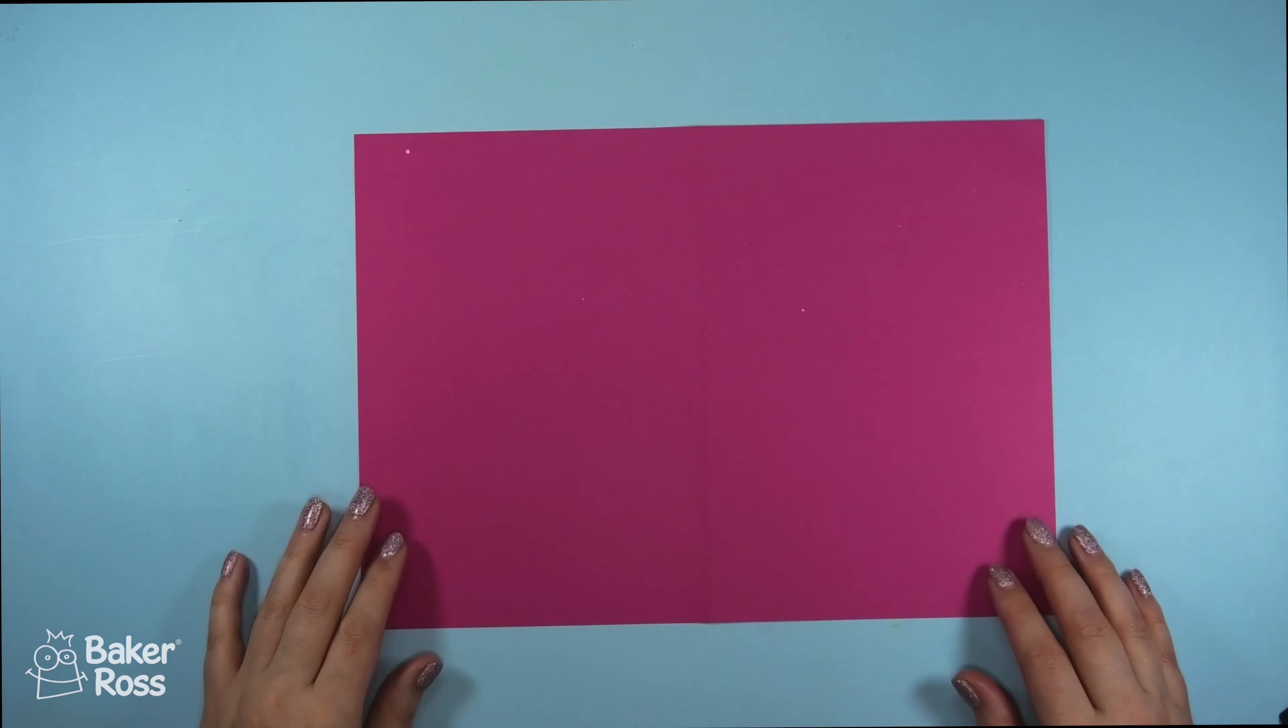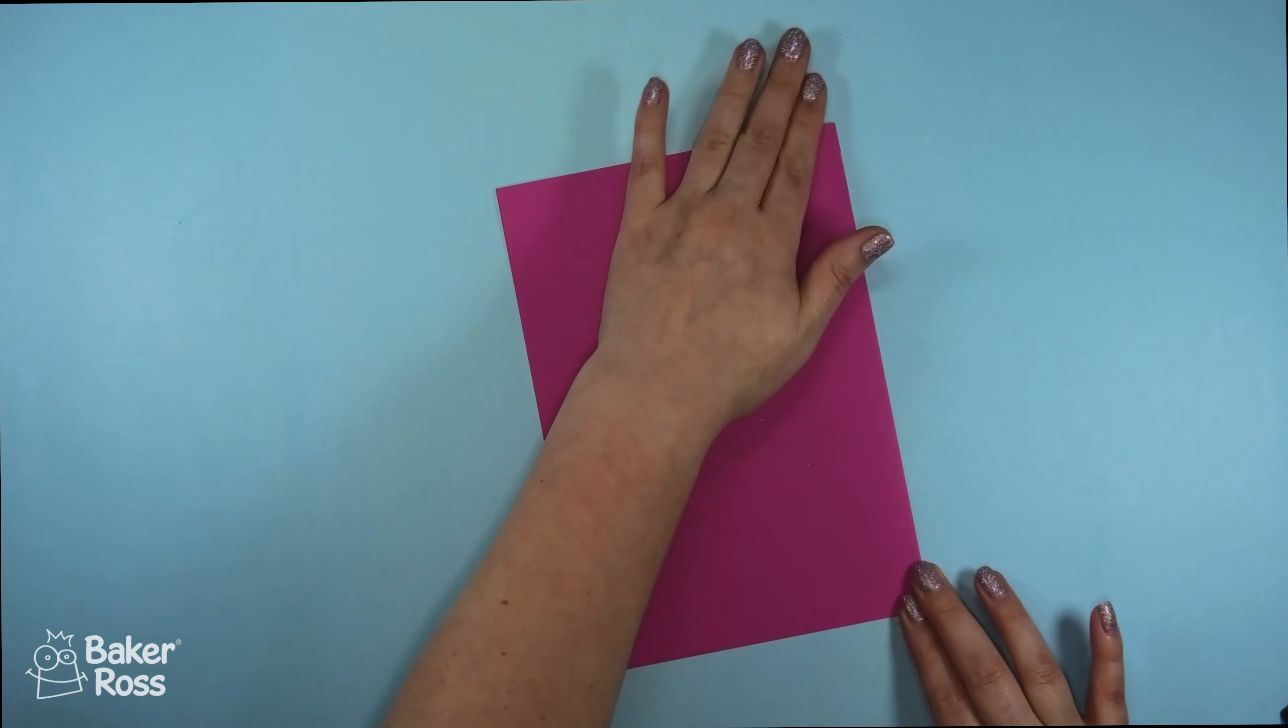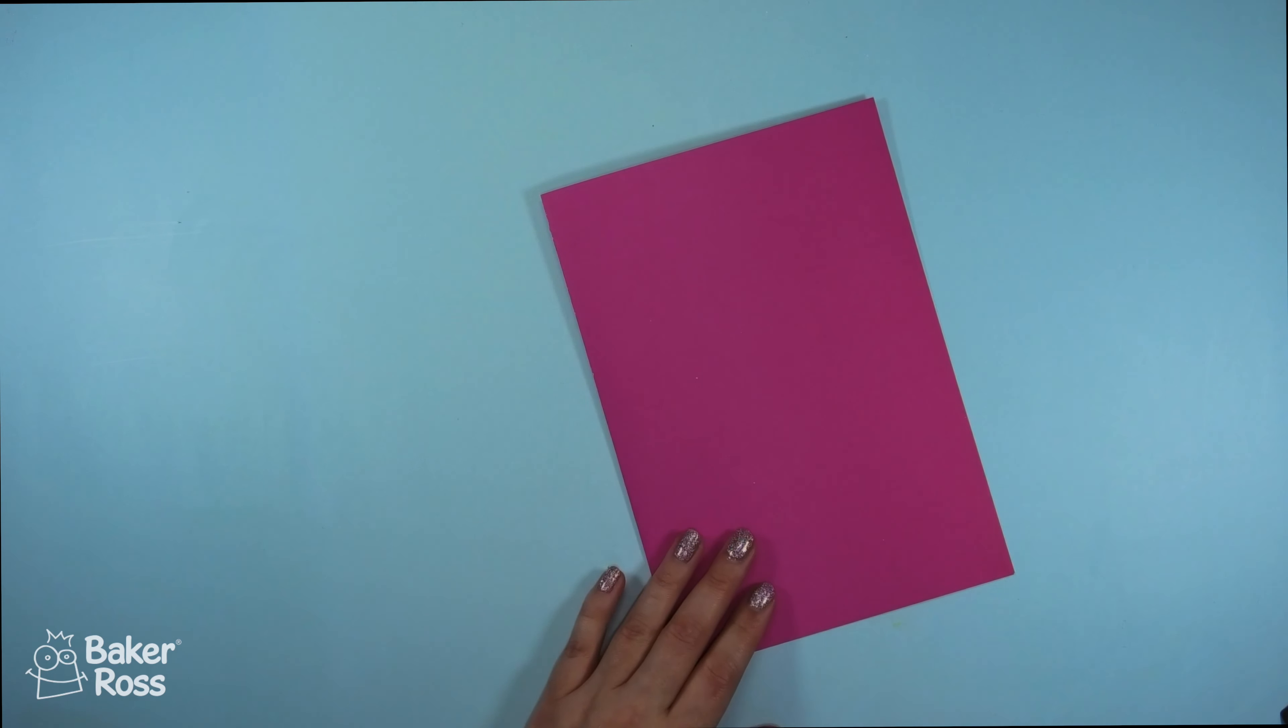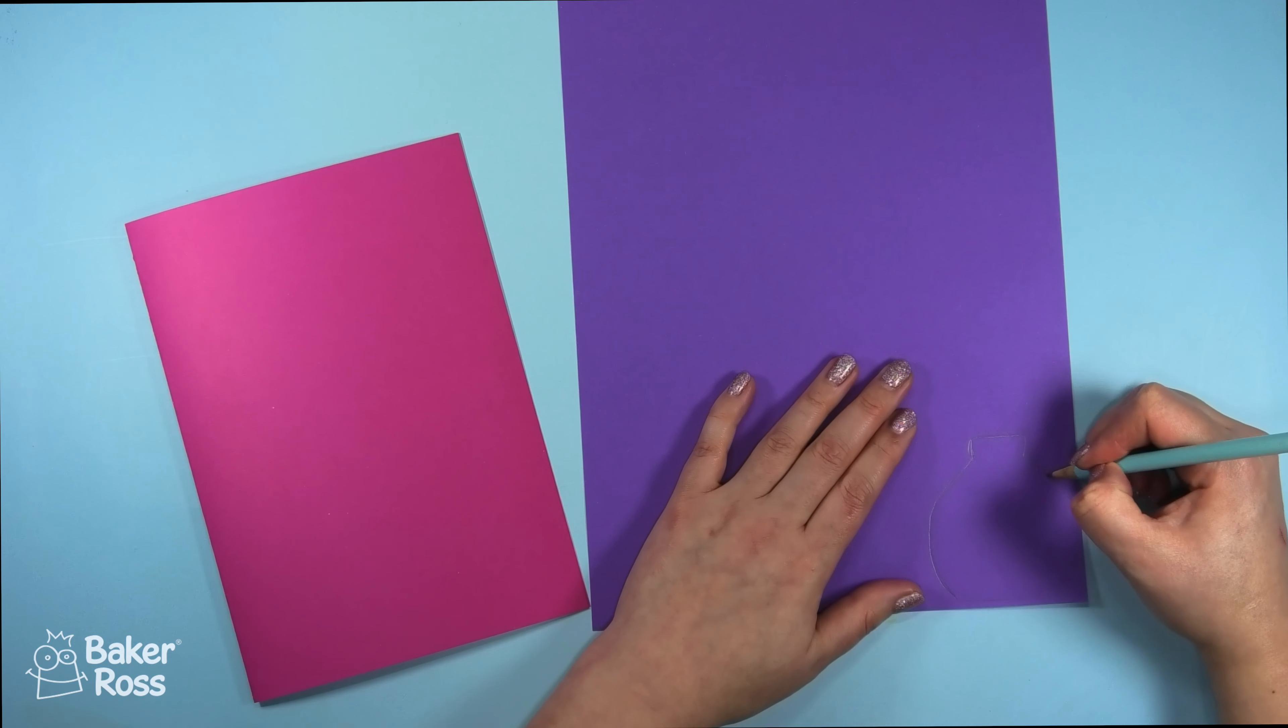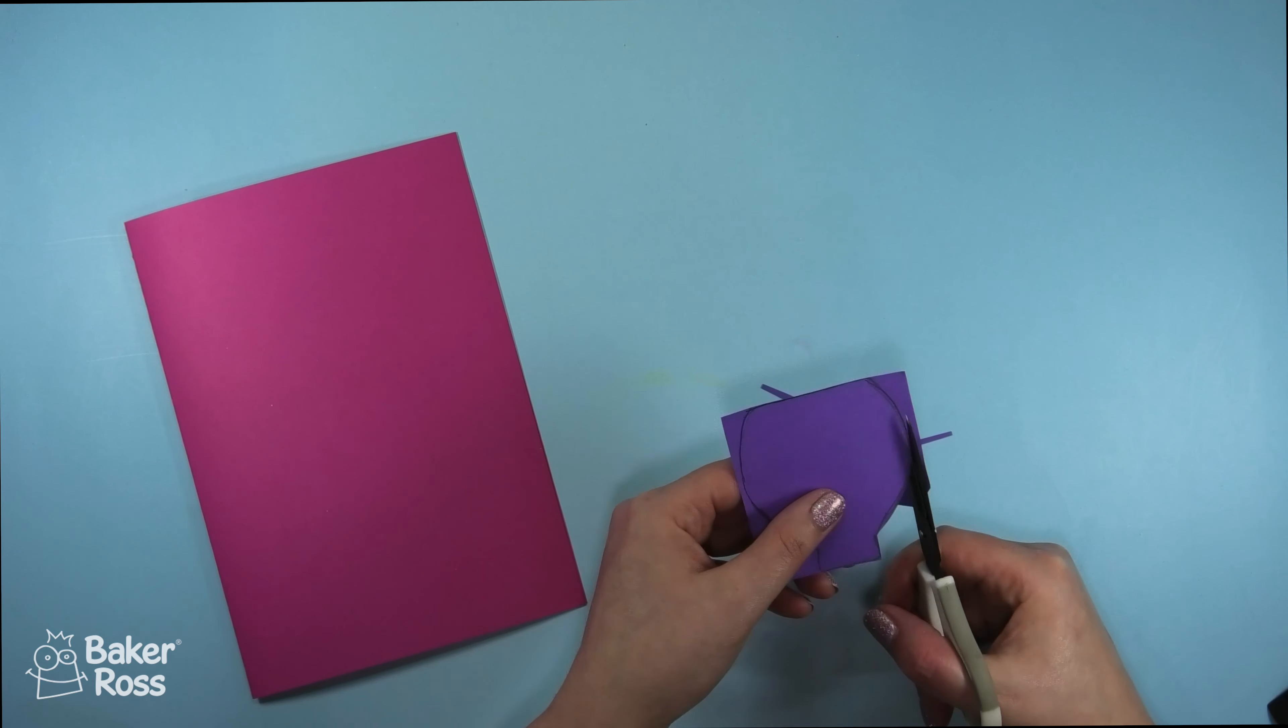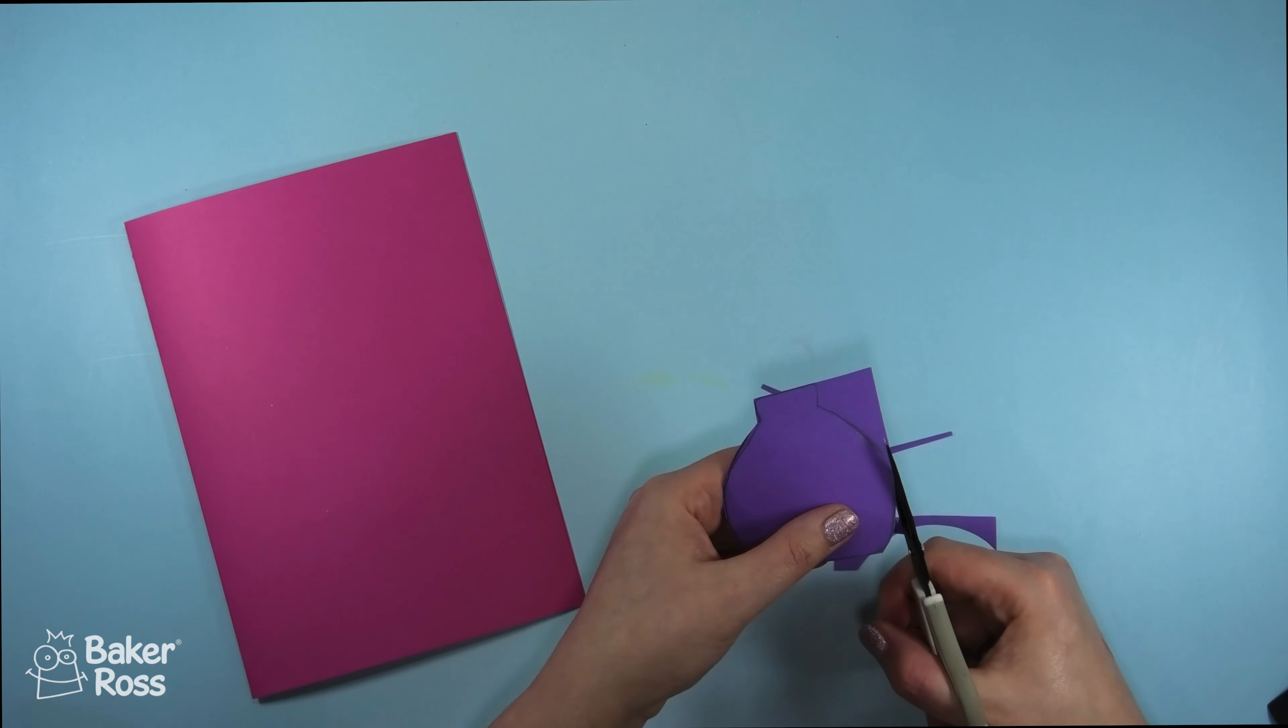Now to finish up I'm going to show you one more card idea. This time we're going to make a vase of flowers. Starting off as always by folding the card in half to create a card base and then I'm going to take a pencil and draw a vase shape onto this purple card and carefully cut that out. This will act as the flower vase so you want to make sure you don't make it too large for your card base and leave plenty of room to add on those flowers.